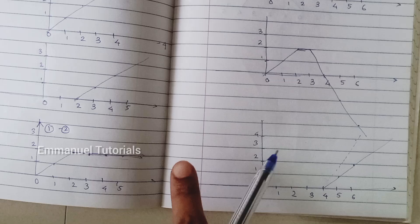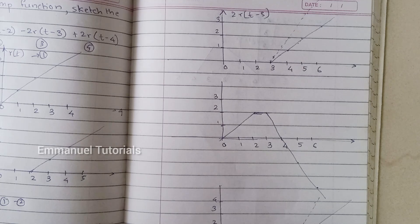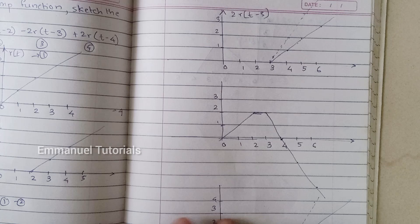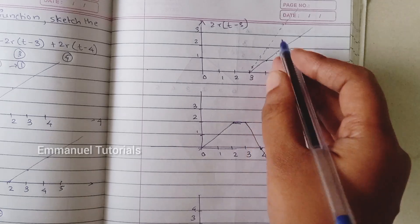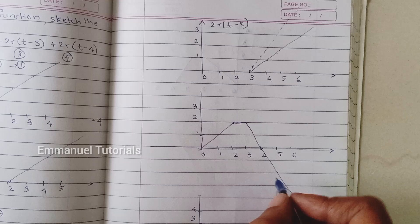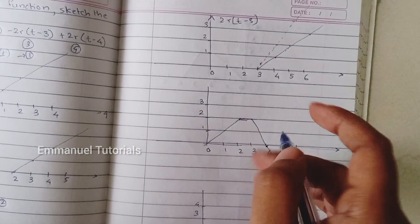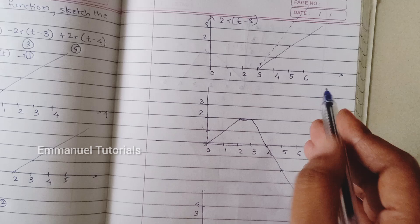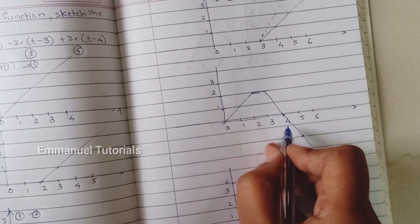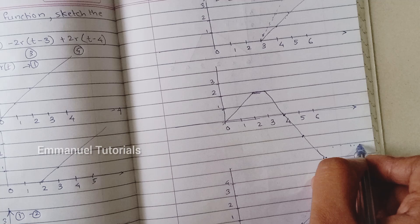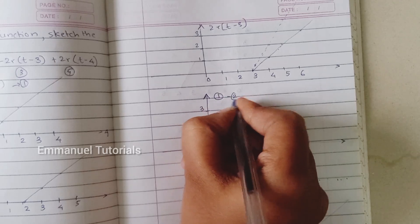At T=4, the first signal's amplitude is 2 and the second signal's amplitude is 4 (because it's the 2× scaled ramp), so 2−4=−2. At T=6, the first signal is still 2 and the second signal is 6, so 2−6=−4. Joining these points gives a decreasing ramp from T=3 onwards that continues to negative infinity. This is our result for parts 1 minus 2 minus 3.